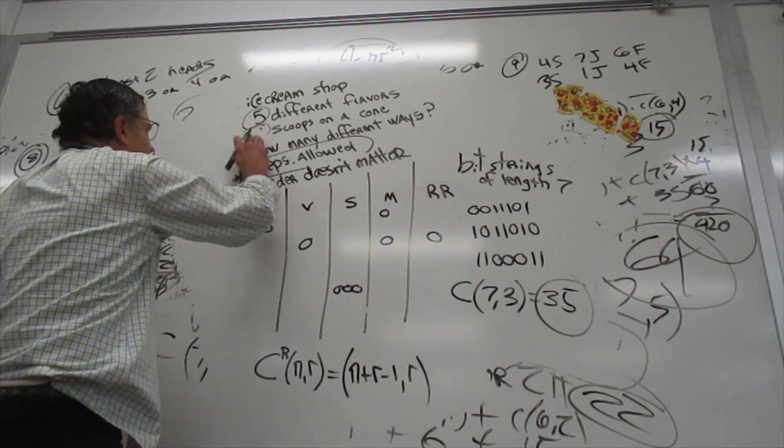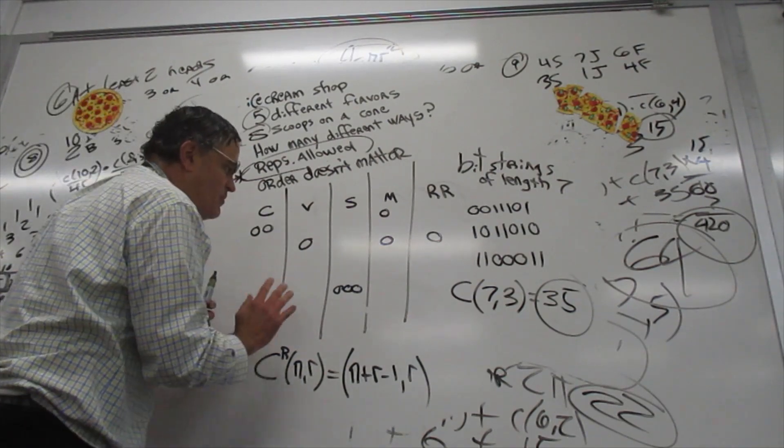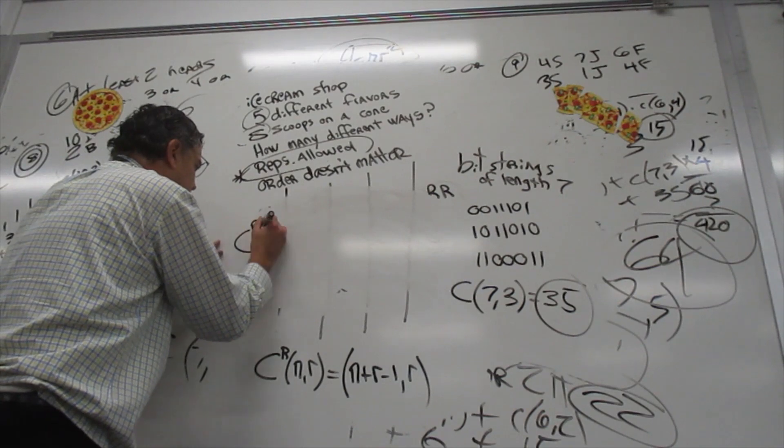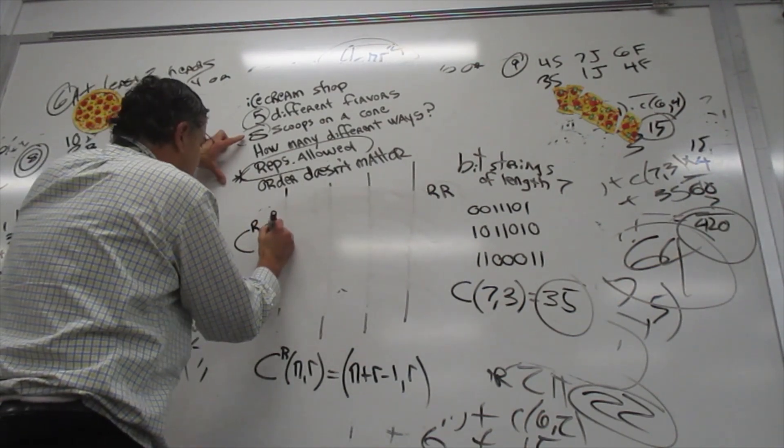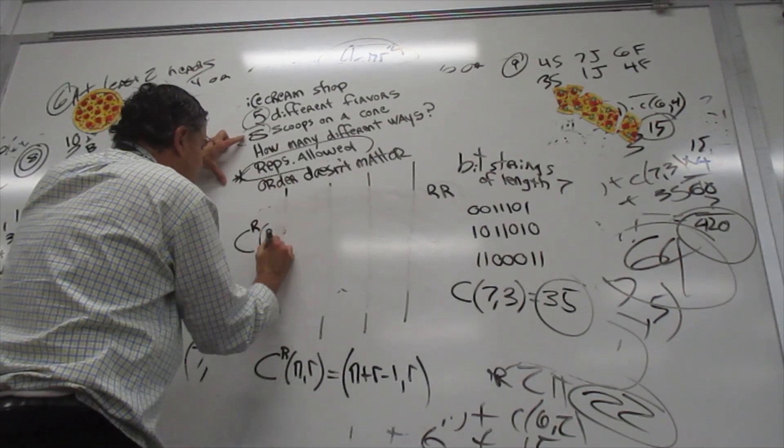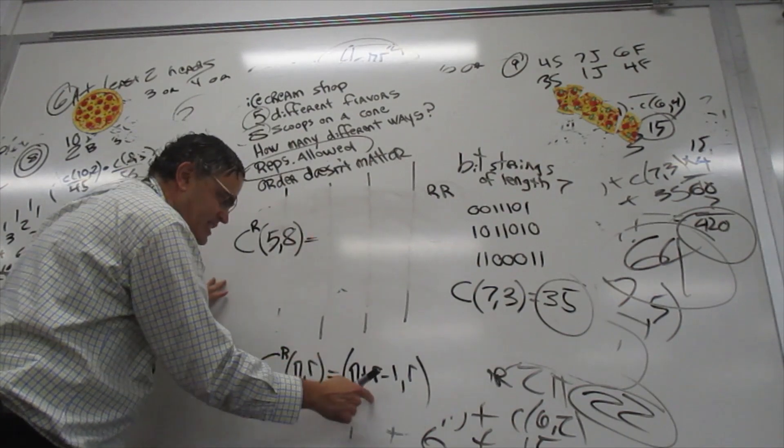8 scoops on the cone would be combinations, reps allowed. We're going to go 5 choose 8 with repetitions allowed. And we fall into this formula here, which is 5 plus 8 minus 1 choose 8.